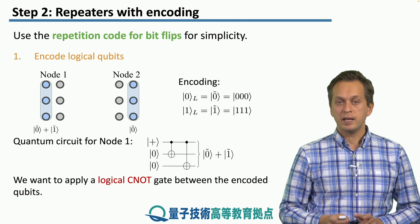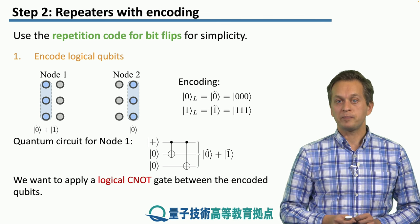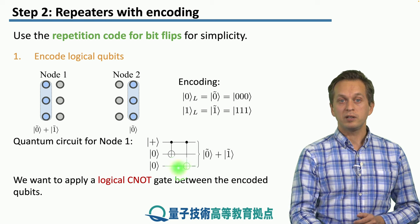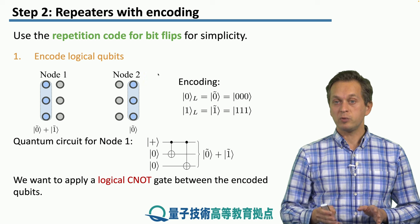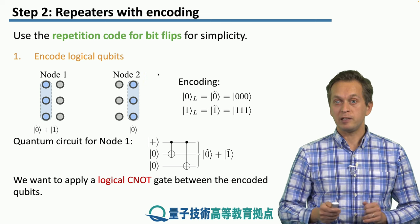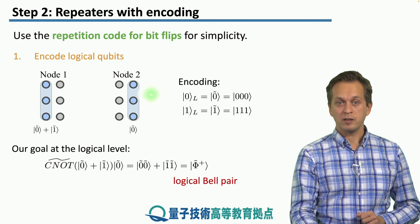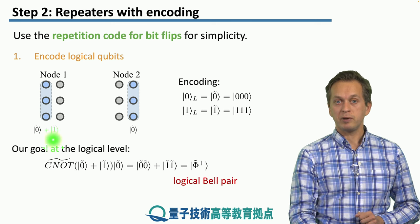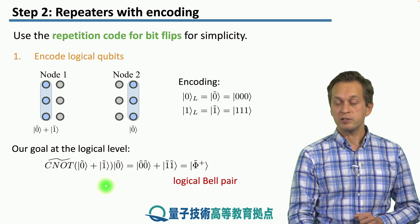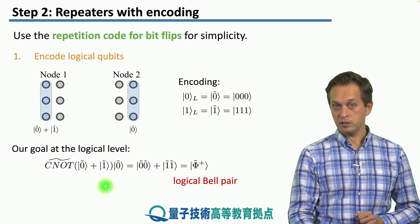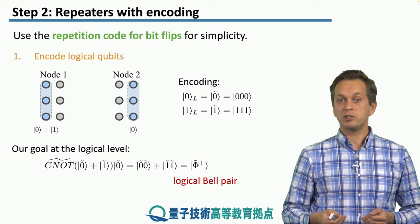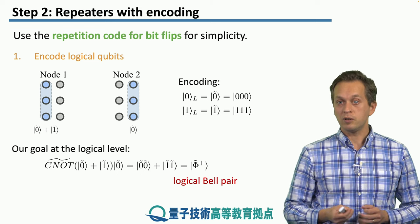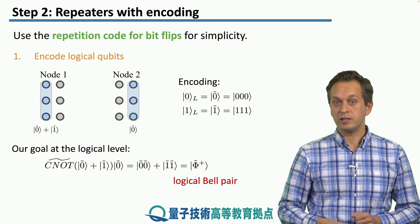Why are we doing this? We're trying to apply a logical CNOT gate between the memory qubits at node one and memory qubits at node two. If we do that, we will create an entangled bell pair at the logical level — this is our goal. The first qubit is in the superposition of logical zero and one, and the second qubit is just a logical zero. So if we apply the logical CNOT, what we get is logical |00⟩ plus logical |11⟩, which is our bell pair but at the logical level — it's the logical Φ⁺.